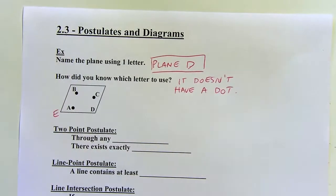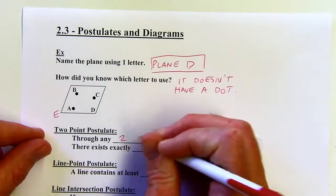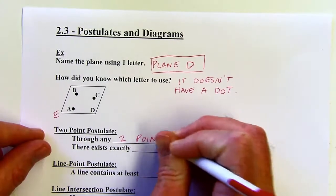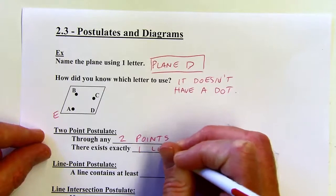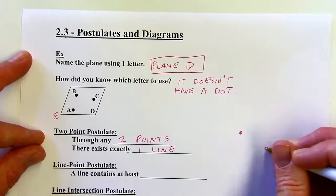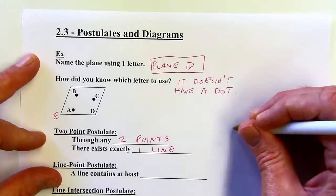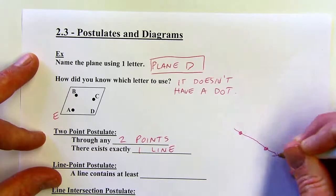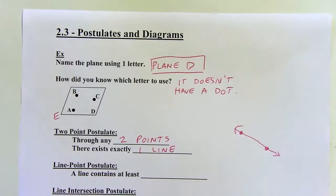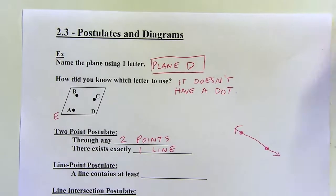We've got a bunch of postulates in this section. The first is the two-point postulate: through any two points, there is exactly one line. So if I draw two random points, there's only going to be one line that goes through both of them. Only one line connects those two points. Another way to think about it: two points determine a line.